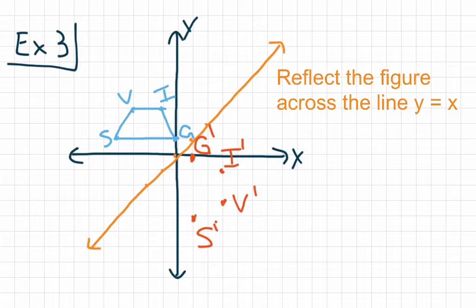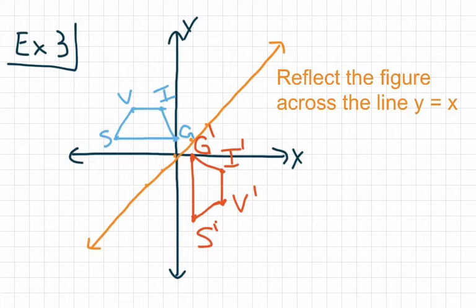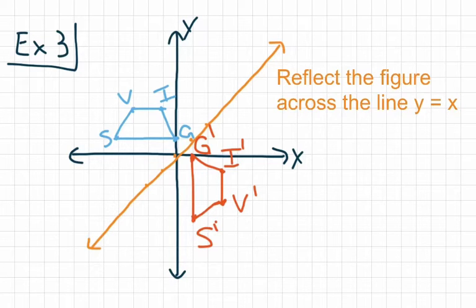Either way, you still end up at S'. Now that we have our points, we go ahead and draw lines connecting them using a straight edge. Figure V'I'G'S' is a reflection of the original figure across the line y equals x. Every point in the pre-image is the same distance from the line of reflection as its corresponding image point.